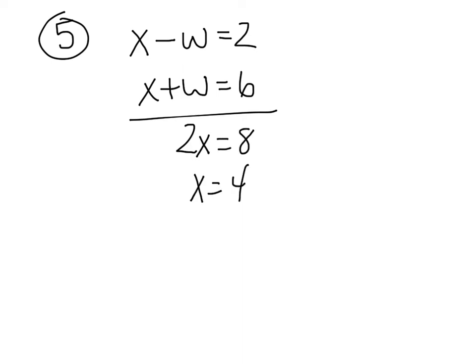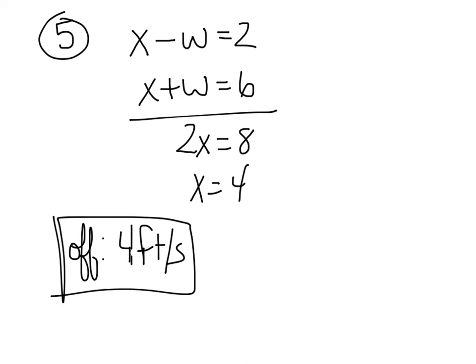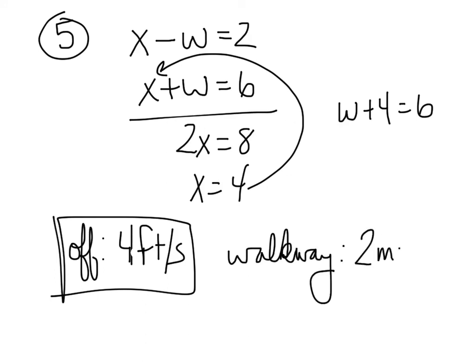So what is the speed of the traveler off the walkway? His speed is 4, oops, not miles per hour. That would be impossible. 4 feet per second. So what is the speed of the walkway? Take the 4 and plug it in. W plus 4 equals 6, which means that would give you 2. So the walkway is 2 feet per second.